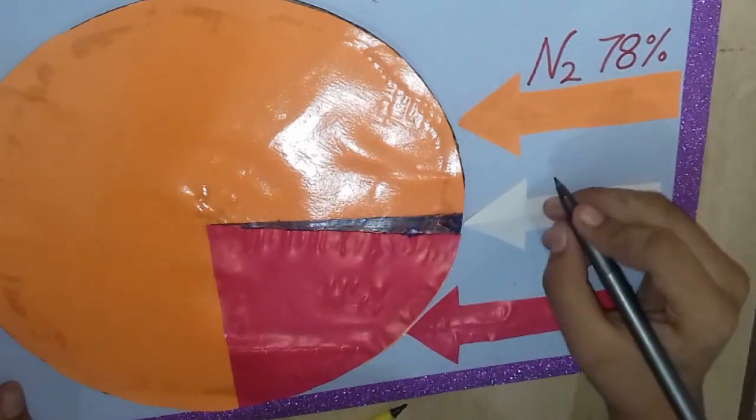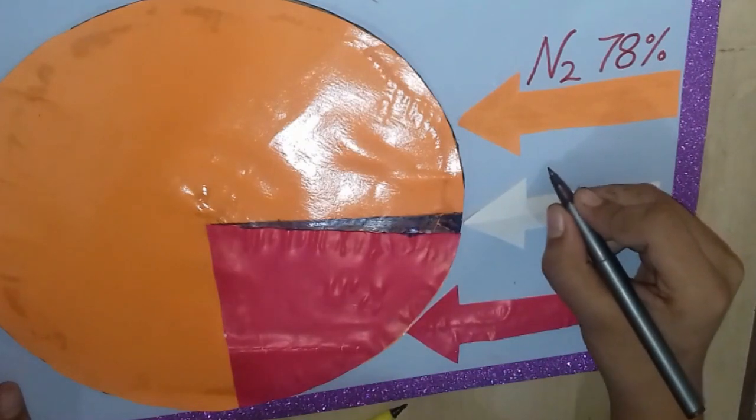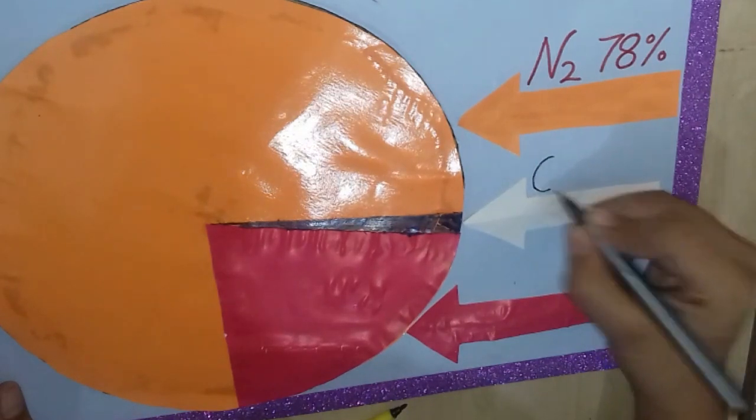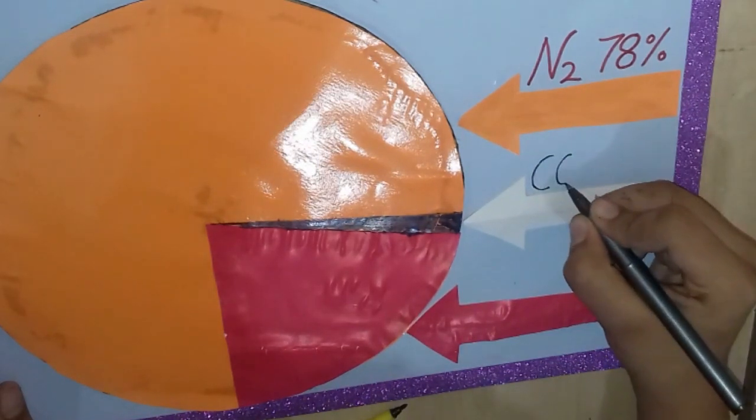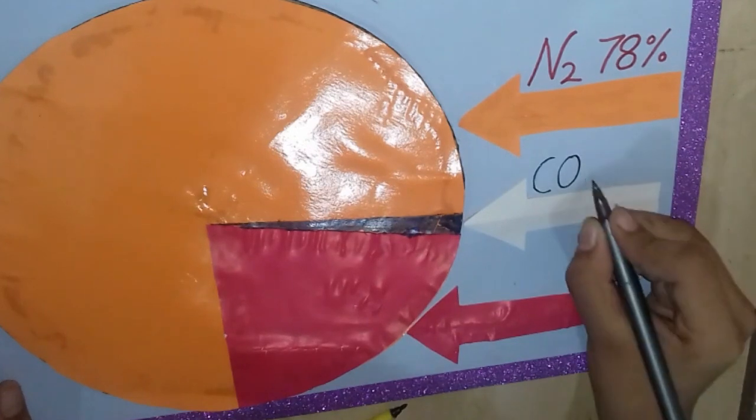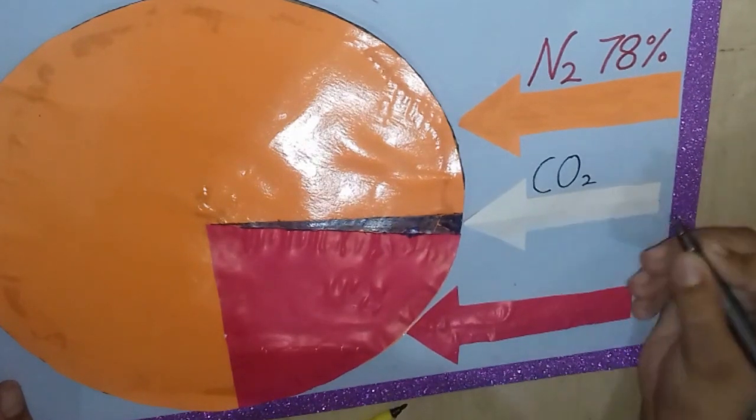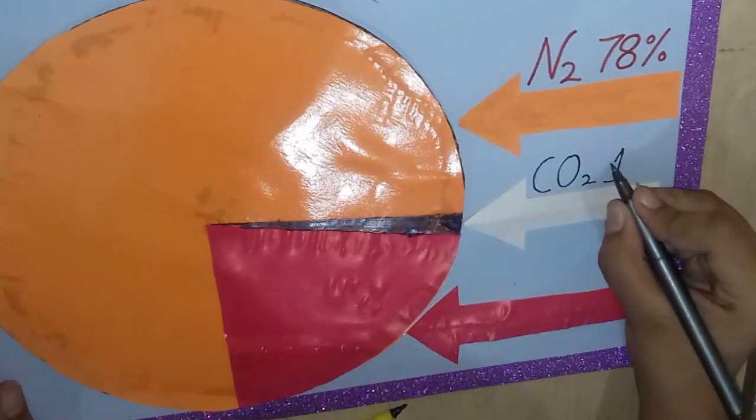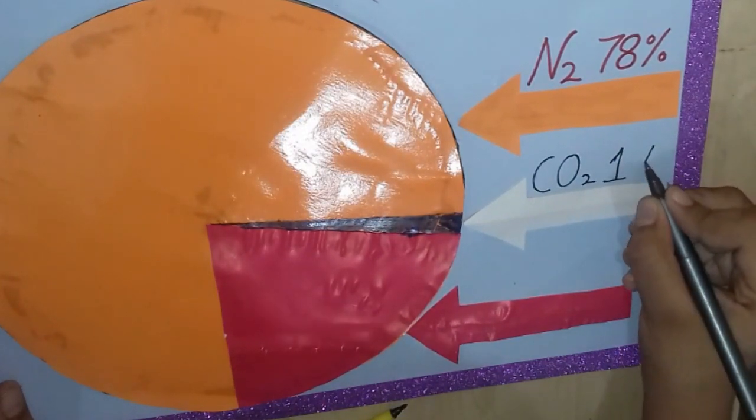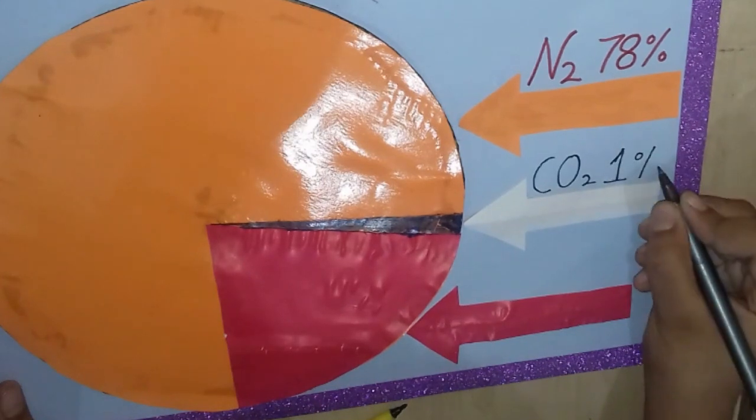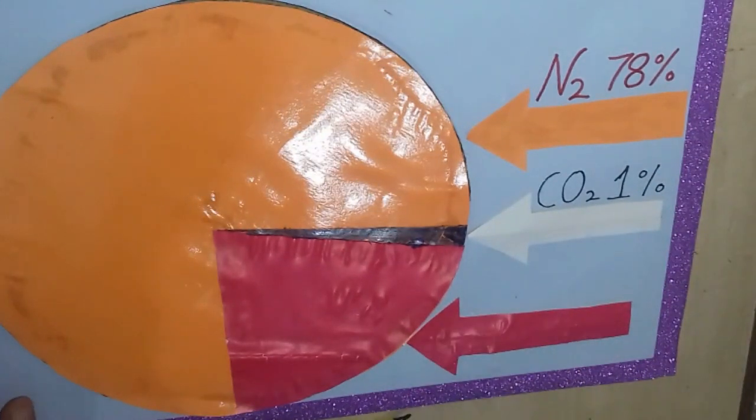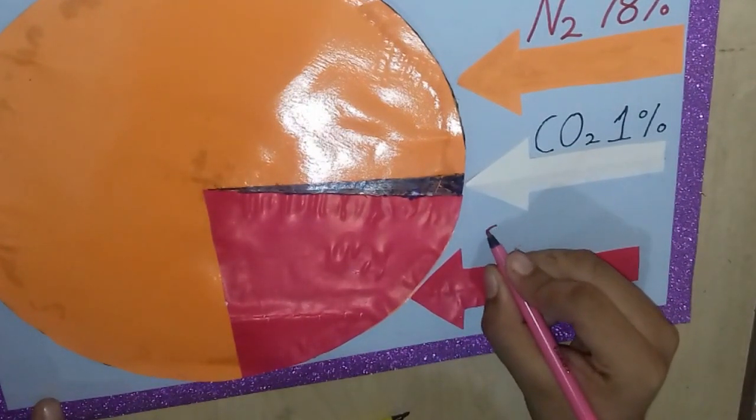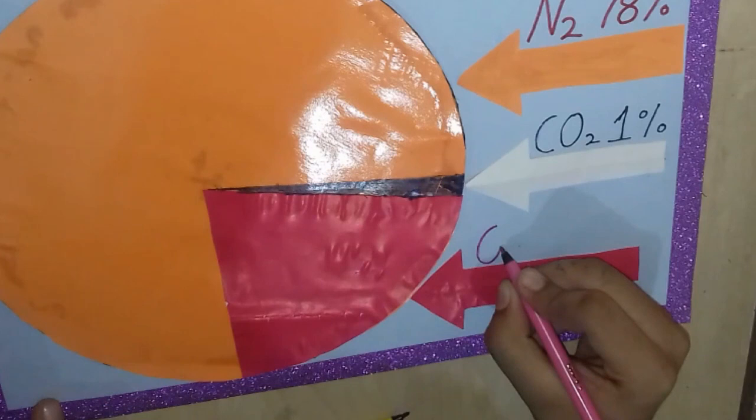Carbon dioxide, which is CO2, that is 1% in the air. Similarly oxygen, that is O2, which is 21% in air.